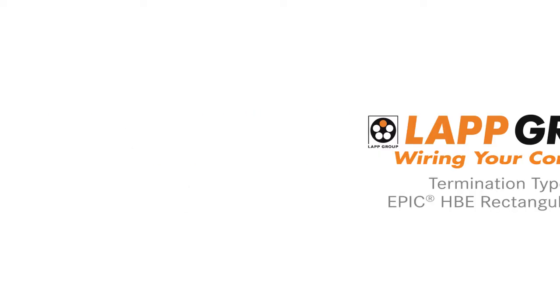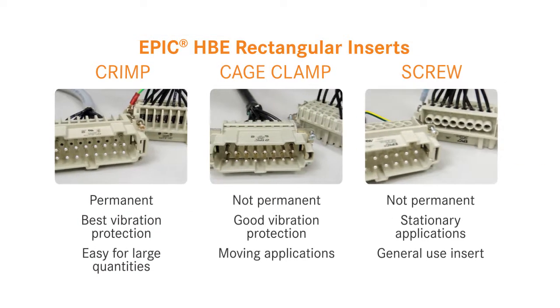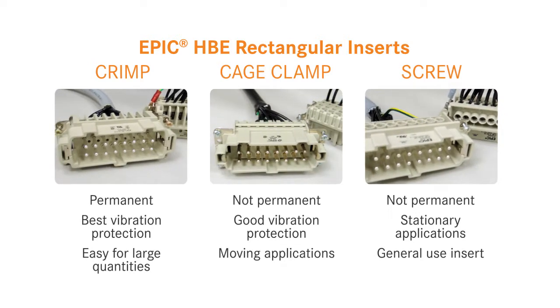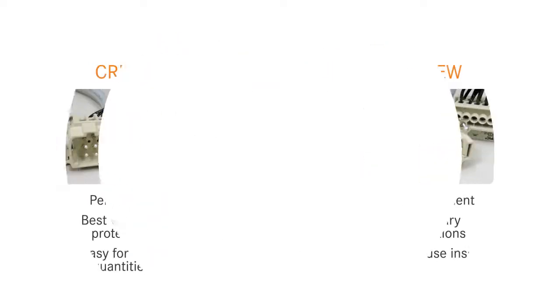LAP Group's EPIC HBE Series Rectangular Connectors offer three different kinds of wire termination for various applications: crimp, cage clamp, and screw. Each termination type has its own benefits for specific applications.